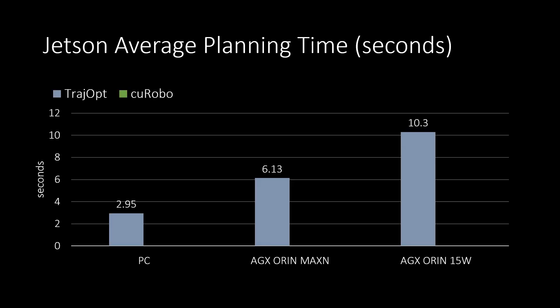Comparing the average planning time across compute devices on an NVIDIA Jetson AGX Orin at max mode, TrajOpt takes 6 seconds, and on a 15W power mode Jetson, it takes 10 seconds. While Kurobo is 28 times faster taking 220 milliseconds in max mode and 21 times faster in 15W mode taking 480 milliseconds.